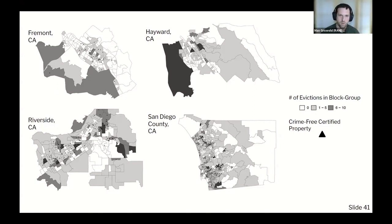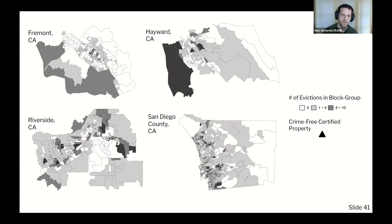We submitted records requests to 58 different sheriff's departments, then used a machine learning vision algorithm to process the data because many forms included retracted line items from evictions that had been canceled. We translated that into a panel dataset. We also submitted public records requests to cities to obtain lists of buildings enrolled in their crime-free housing program. Unfortunately, because of the eviction moratorium, many cities had suspended the policy. We were asking for retrospective enrollment data from 2019, and only four locations actually maintained that data and were able to provide it. We accordingly analyzed these four locations.